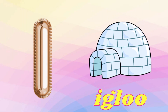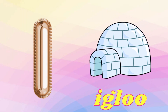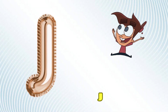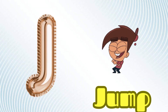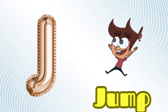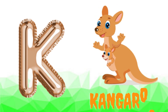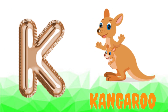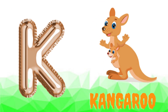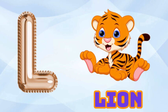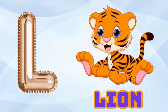I is for igloo, i-i-igloo. J is for jump, j-j-jump. K is for kangaroo, k-k-kangaroo. L is for lion, l-l-lion.